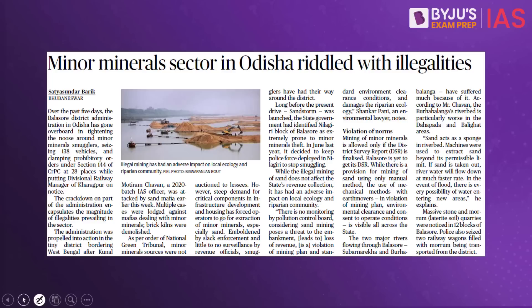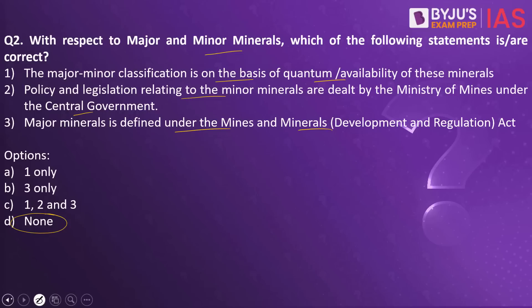Why have we taken this practice question? Because this article in the Hindu makes a reference to minor minerals. When you look into the first statement, the major-minor classification is on the basis of quantum or availability of these minerals — this is wrong. The classification has nothing to do with availability or quantity; it is more to do with the value of these minerals.